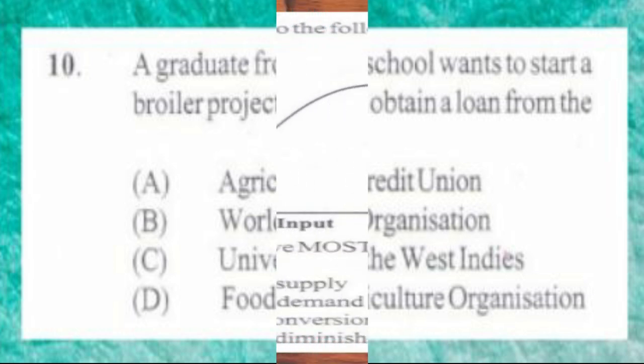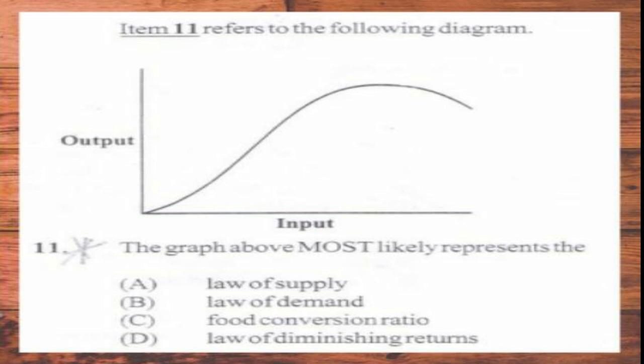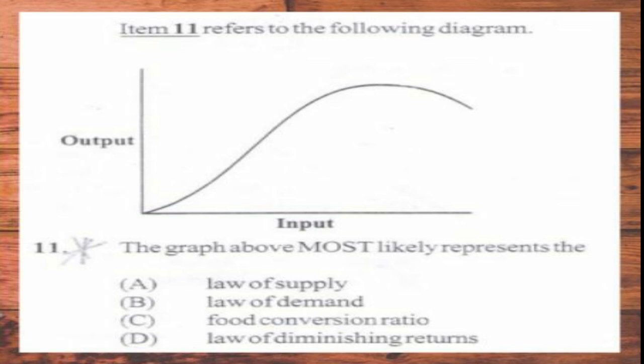Question number 11. Item 11 refers to the following diagram. The graph shown likely represents the: A. Law of supply, B. Law of demand, C. Food conversion ratio, D. Law of diminishing returns. The answer is D, law of diminishing returns. Output is on the vertical axis and input on the horizontal axis. The law of diminishing returns is when input is added increasingly for just one item; output will increase up to a level then start to decrease, as shown by the curve on the graph.